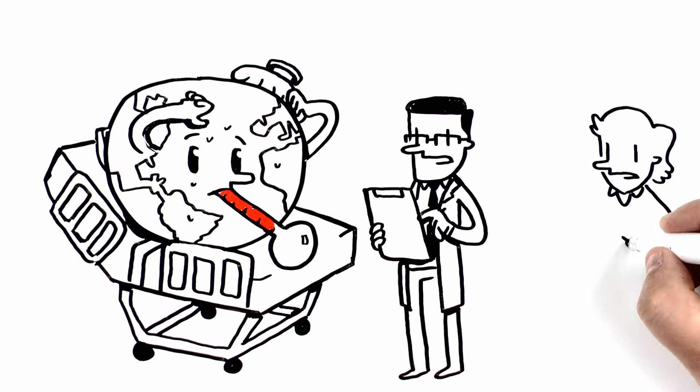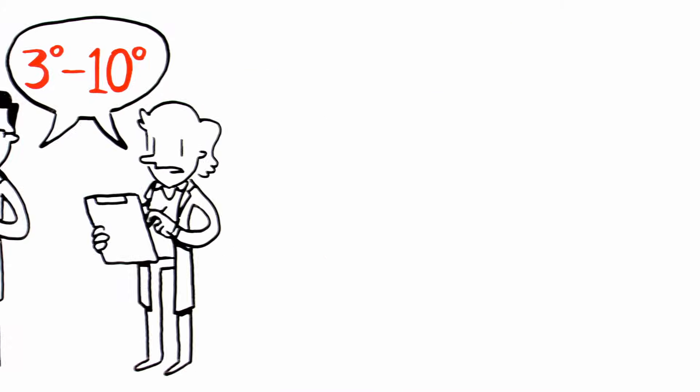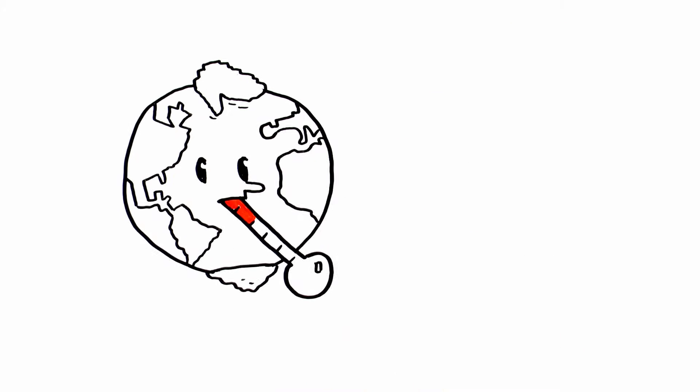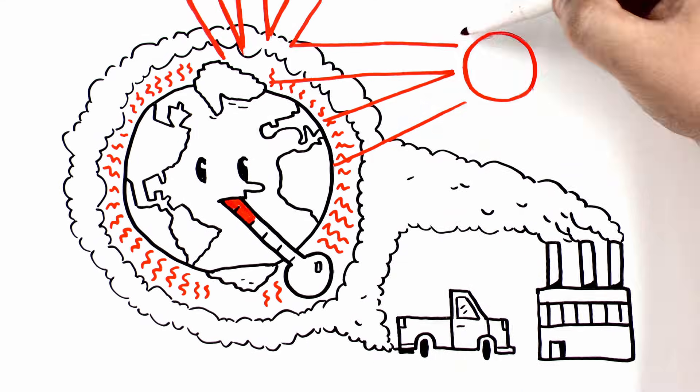And scientists believe Earth's temperature could rise by 3 to 10 degrees this century. Why? For one thing, greenhouse gases in the atmosphere. They raise the temperature by trapping heat.